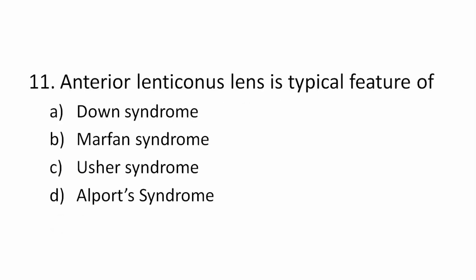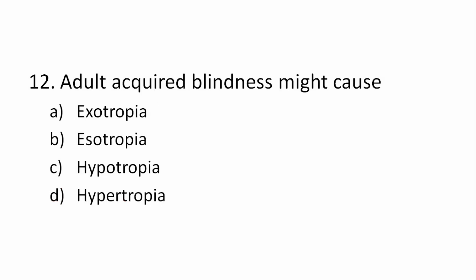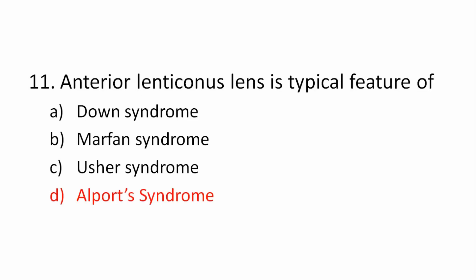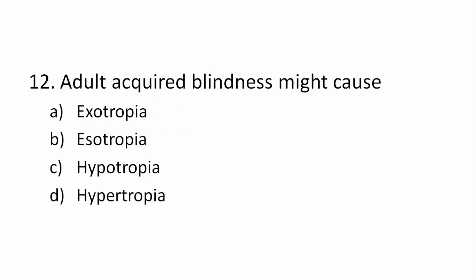Question 11: Anterior lenticonus of the lens is a typical feature of which syndrome? Options: Down syndrome, Marfan syndrome, Osher syndrome, Alport syndrome. The correct answer is Alport syndrome.